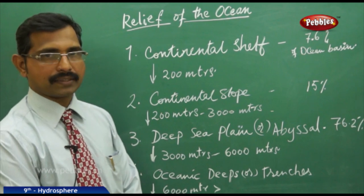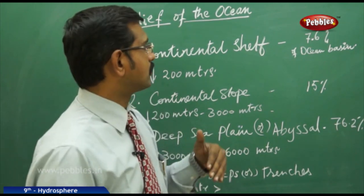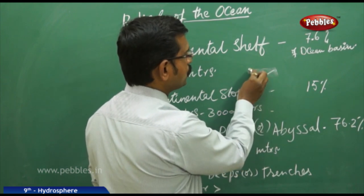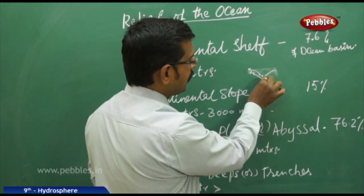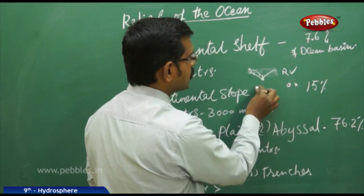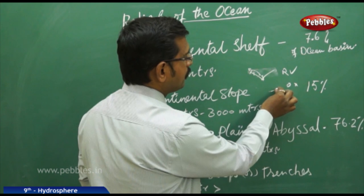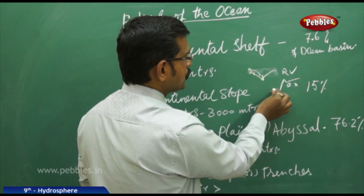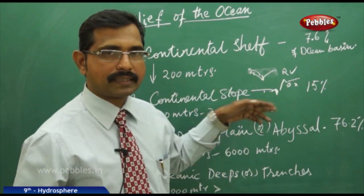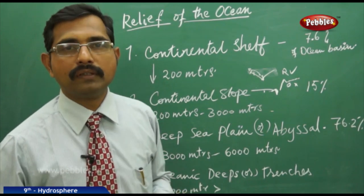The fourth part is oceanic deeps, or trenches, which are deeper than 6000 meters. Unlike rivers where the deepest part is in the center, ocean trenches are not found in the middle of the ocean. Instead, they are found near the continents — nearer to the continental shelf. So in the midst of the ocean you find deep sea plains, but trenches occur near the continents.